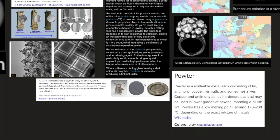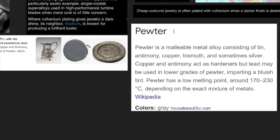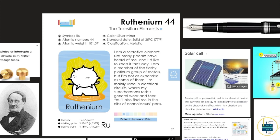But as with most of the platinum group metals, Ruthenium's main applications are as a catalyst and an alloying agent. Ruthenium appears in a particularly exotic example, single crystal superalloys used in high-performance turbine blades, when mere cost is of little concern. Where Ruthenium plating gives jewelry a dark shine, its neighbor Rhodium is known for producing a brilliant luster, which we talked about in the Rhodium video. Other than that, let's continue with Ruthenium.